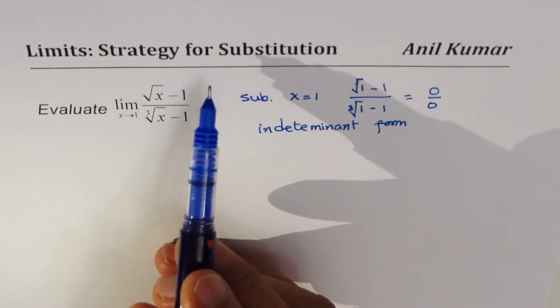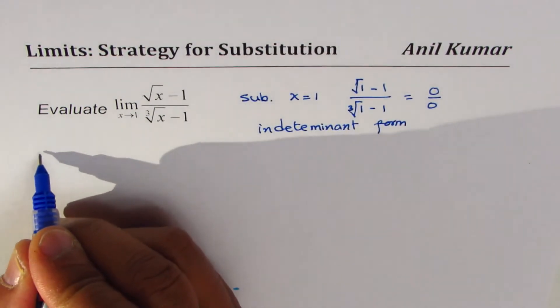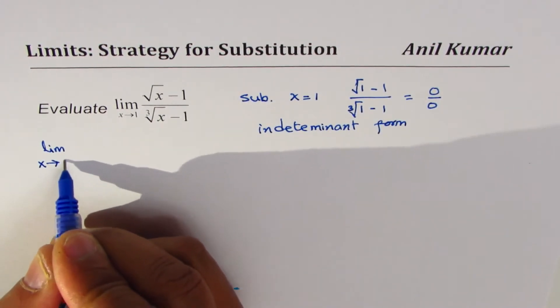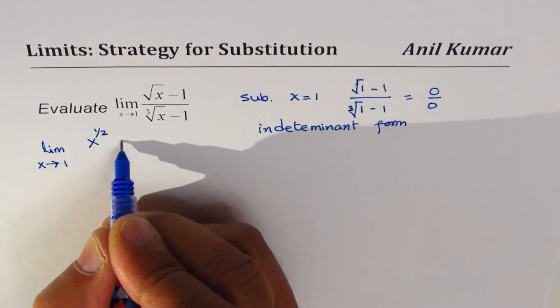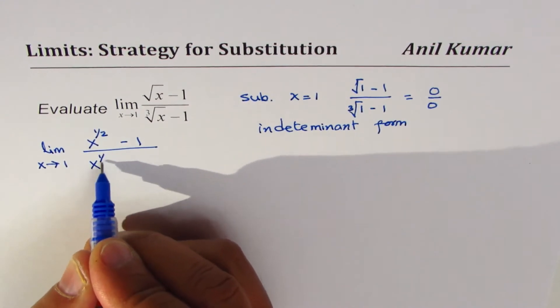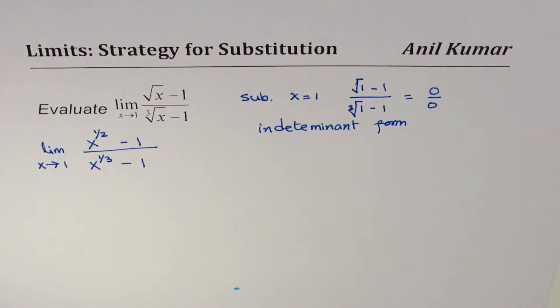Now how to really factor or simplify this? Substitution is a great technique. So we'll see how to substitute. If I rewrite this question, I could write this as limit x approaches 1, square root of x is x to the power of half minus 1 divided by cube root is x to the power of 1 over 3 minus 1.